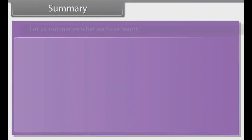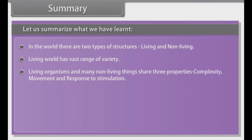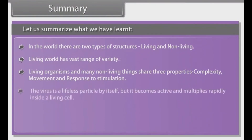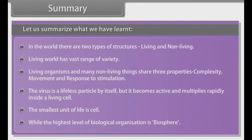In the world there are two types of structures: living and non-living. The living world has a vast range of variety. Living organisms and many non-living things share three properties: complexity, movement, and response to stimulation. The virus is a lifeless particle by itself, but becomes active and multiplies rapidly inside a living cell. The smallest unit of life is the cell, while the highest level of biological organization is the biosphere.